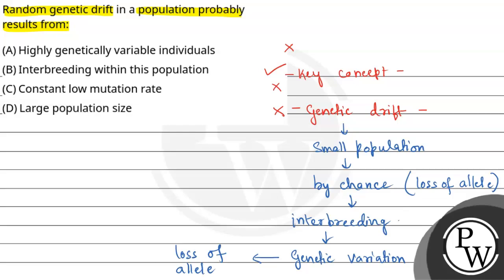The correct answer for this question is Option B: interbreeding within this population. I hope you understood it well. Best of luck!